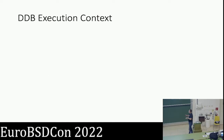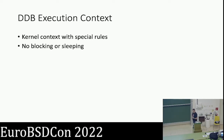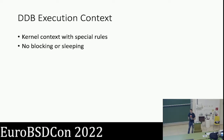Now let's talk about what it's like to run inside of DDB and what you need to be aware of when writing code for a custom function. It is part of the kernel, so it has all the usual kernel rules — such as not having a lot of stack, so don't assume you can have large local variables. But it has additional constraints: you really cannot block or sleep. The scheduler is not running in DDB. You're borrowing the current thread that happened to enter the debugger, but you're not really able to do any real scheduling work. The system is paused, so you need to do very simple things.